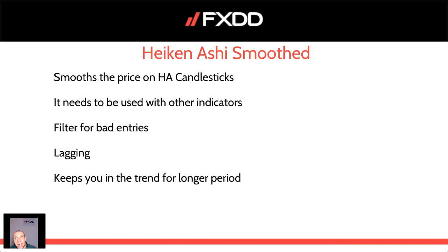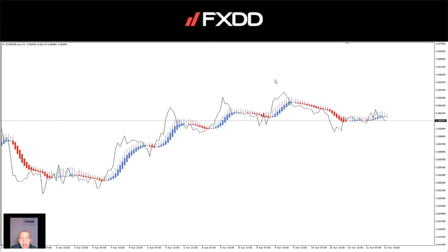We usually use Heiken Ashi Smoothed for entries, for trends, and for filtering bad entries. Heiken Ashi Smoothed are lagging candlesticks — they use a formula that takes the average of standard Heiken Ashi through calculations. They lag behind, but that means you will stay in the trend for longer. You may have a slightly later entry — maybe one or two candles late — but if there is a trend, it will keep you in it for a longer period. This is how it looks on a line chart alongside the standard price line.